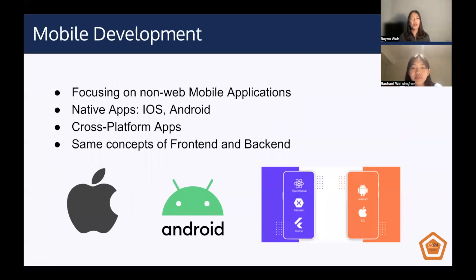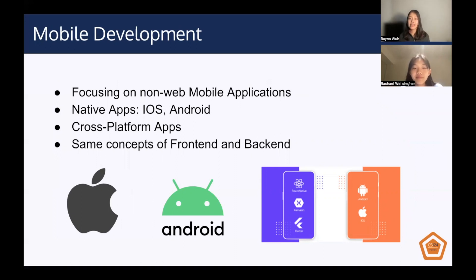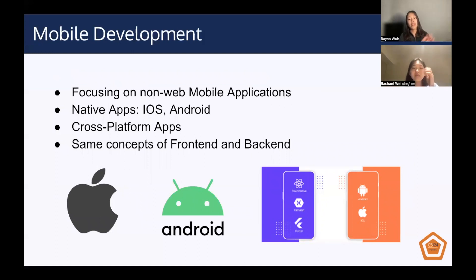Mobile development is next. We'll be focusing on non-web mobile applications for this category to keep it distinct from web development. The first subcategory is native apps, which are written in the programming languages and frameworks provided by the actual platform owners, and they run directly on the operating system of the device, like iOS or Android. Cross-platform apps, on the other hand, are written in different programming languages and frameworks, but compiled into the native application running directly on the device's operating system. For mobile development, we have the same concepts of front-end and back-end as in web development.